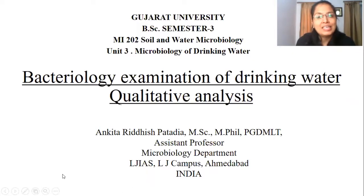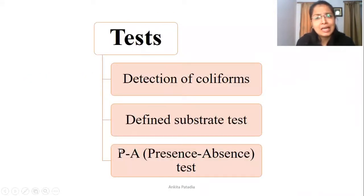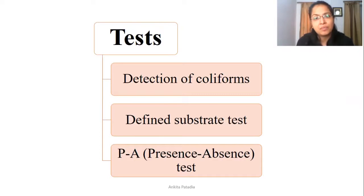In qualitative analysis, different tests are performed. The tests listed are: detection of coliform, defined substrate test, and presence and absence test — also called the P and A test. So starting with the detection of coliform.